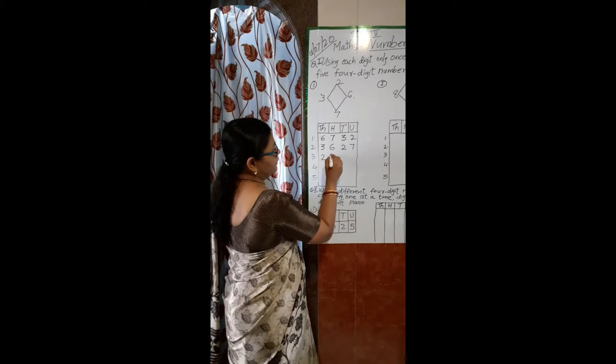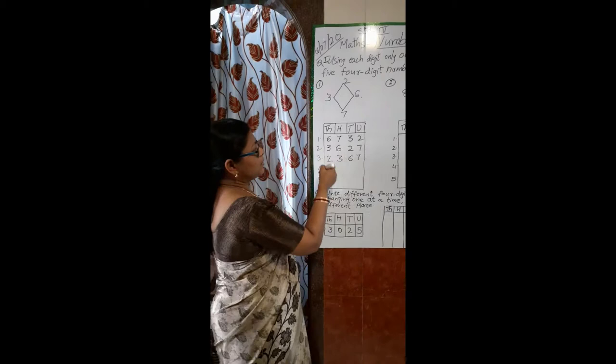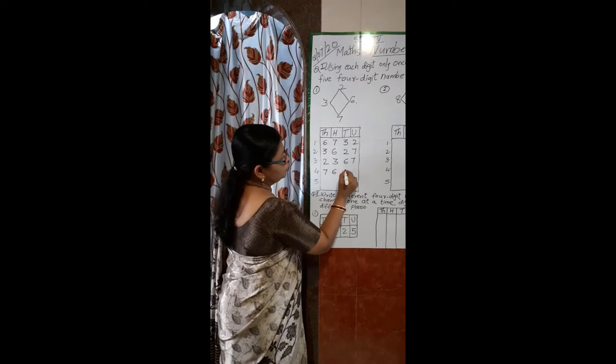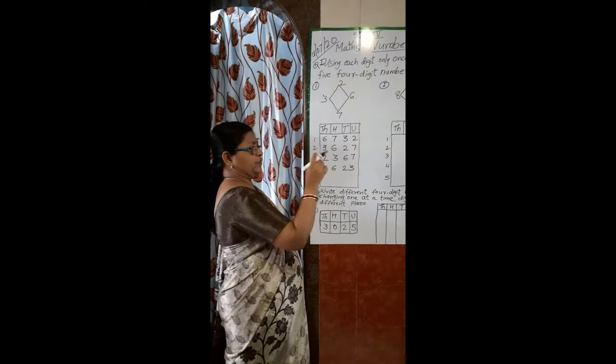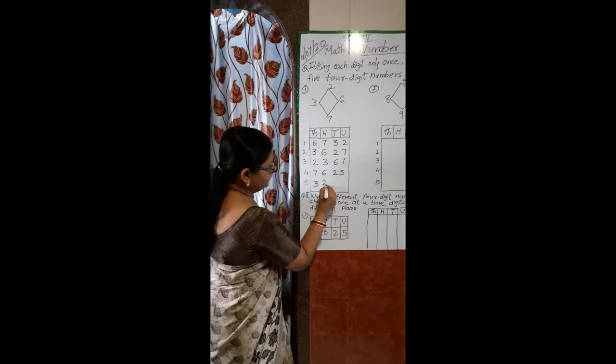Now with 2 in the thousands place, 3 in the hundreds place, 6 in the tens place, and 7 in the units place, the number will be read as 2367. Then with 7 in the thousands place, 6 in the hundreds place, 2 in the tens place, and 3 in the units place, we read this as 7623.